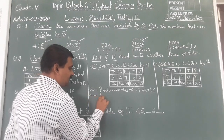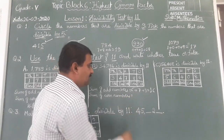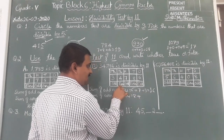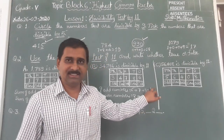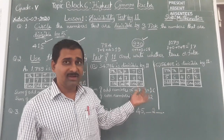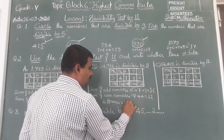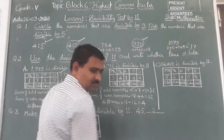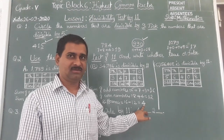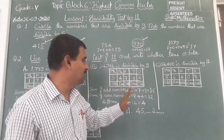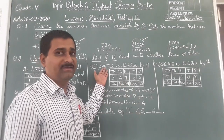We are not getting the same number. If they are not the same, we should subtract — that is the difference. 16 minus 12 is 4. This 4 is not divisible by 11. If it were divisible by 11, then we could say the number is divisible by 11. We can say that 34,786 is not divisible by 11.